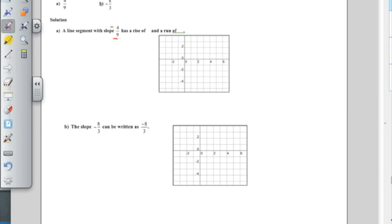A line segment with a slope of four ninths has a rise of four and a run of nine. So you want to make sure that you put your point far enough to the left that you can actually get that run of nine in here. So if I put the point here, so my first point. From that point, I'm going to have to go up four. Do I have enough room to go up four? One, two, three... No, I don't. Can't even put it there.